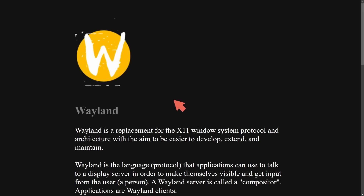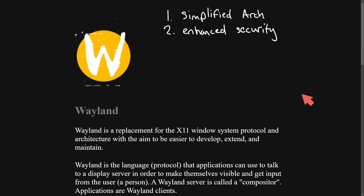Wayland boasts several features over X11. First, a simplified architecture: Wayland employs a more straightforward architecture compared to X11's complex client-server model. The compositor directly manages input and output, reducing latency and enhancing performance. Second, enhanced security: Wayland isolates applications from one another, mitigating the risk of unauthorized access between applications. Third, modern features: better support for high DPI displays, smoother animations, and more configurations including extra desktops and embedded systems.